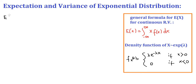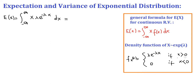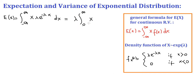Now we are going to start with the definition of expectation. For continuous random variables, expectation is the integral from negative infinity to infinity of x times the density function, which is λe^(−λx) dx. Since we know that the exponential random variable is supported from zero to infinity, we are going to change the limits of integration from zero to infinity. We can take lambda out in front of the integral sign.